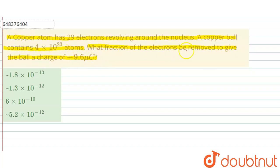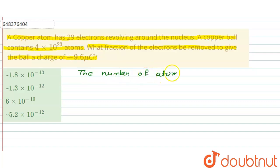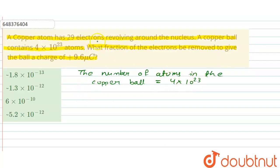We have to calculate how many electrons are to be removed from this copper ball to give it a charge of 9.6 microcoulombs. The data given: the number of atoms in the copper ball is equal to 4 × 10²³, and in each atom the number of electrons is 29.